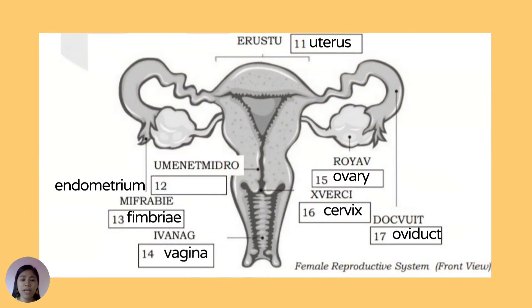Female reproductive system, front view — correct answers: 11 uterus, 12 endometrium, 13 fimbria, 14 vagina, 15 ovary, 16 cervix, and 17 oviduct.